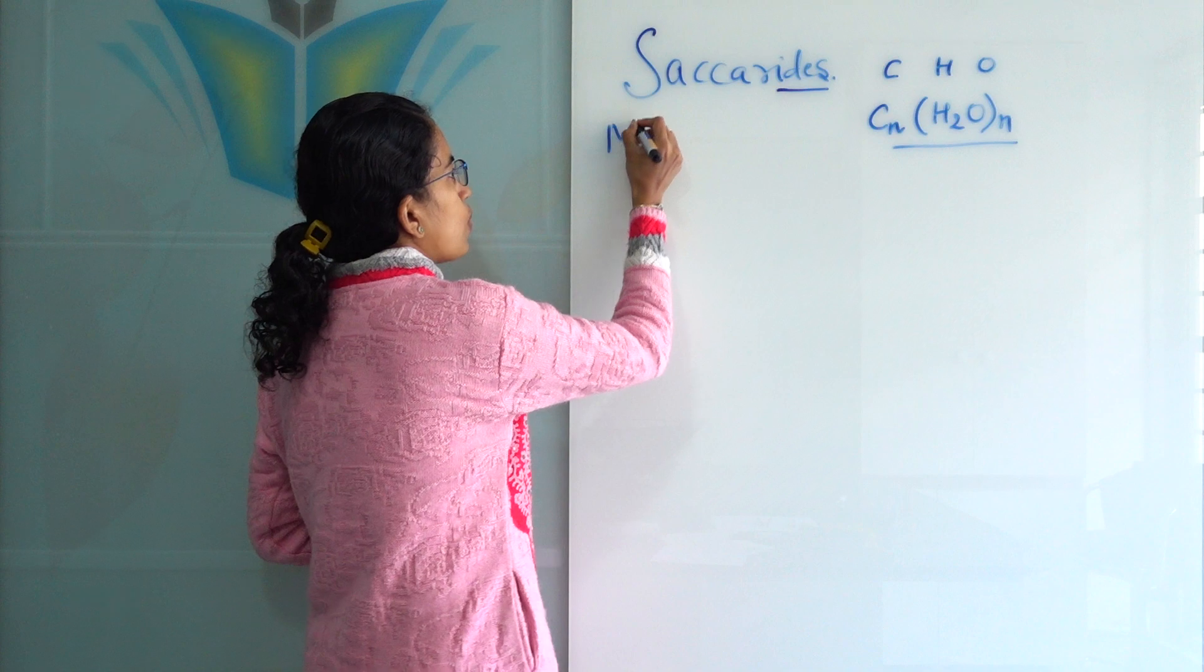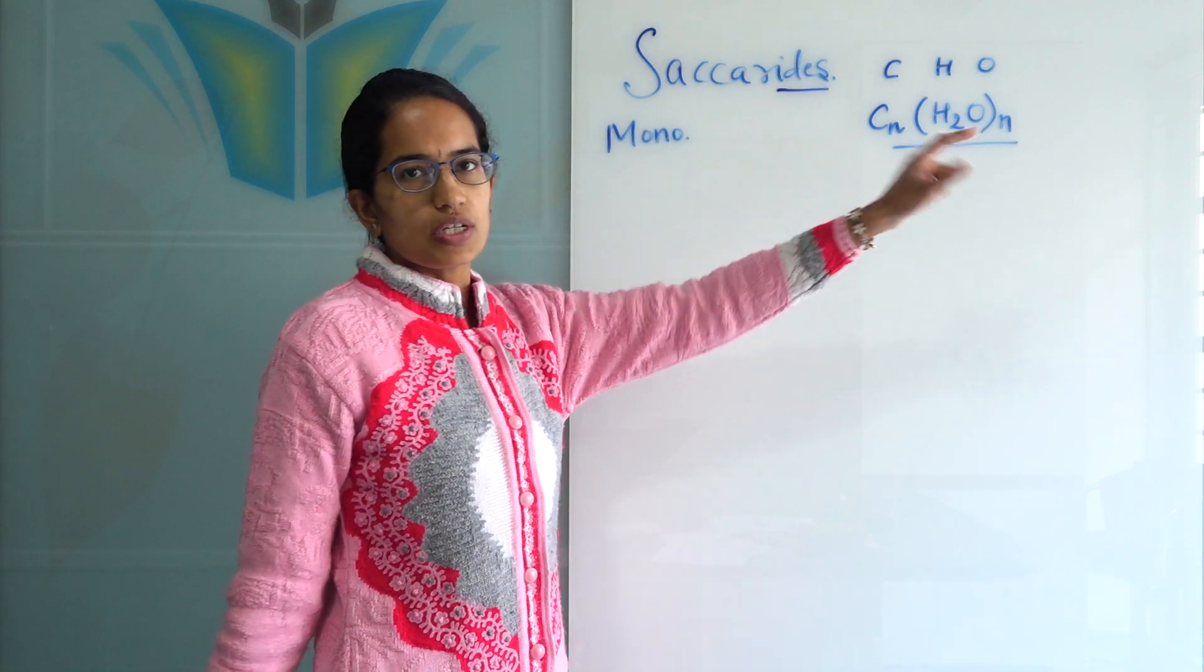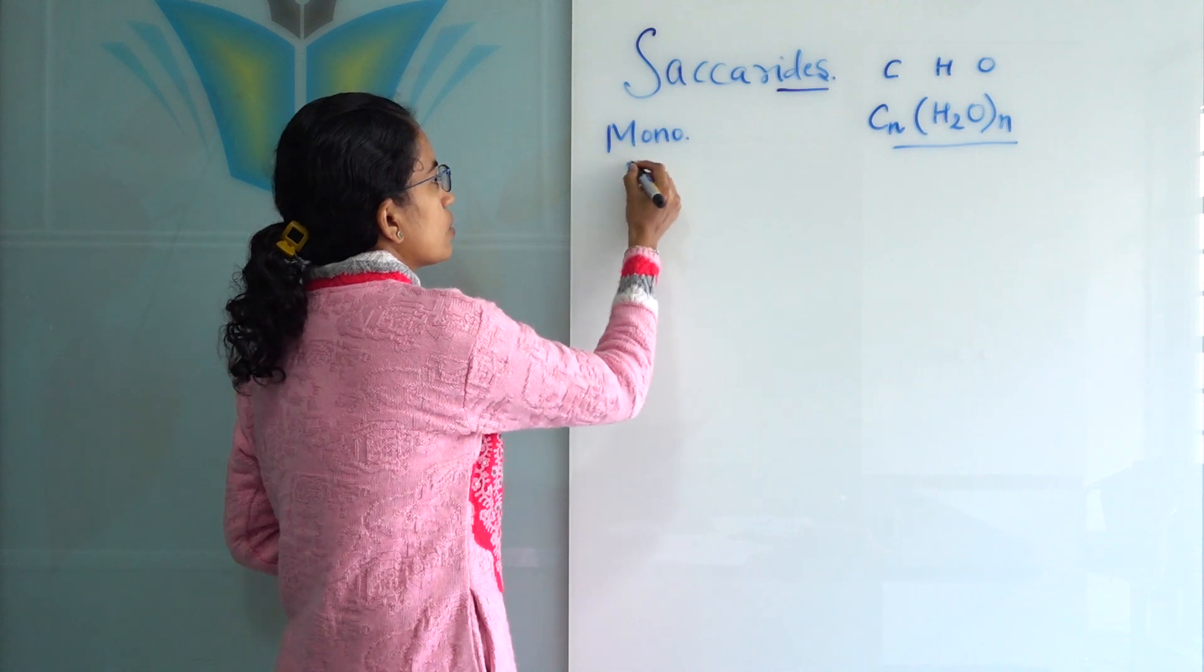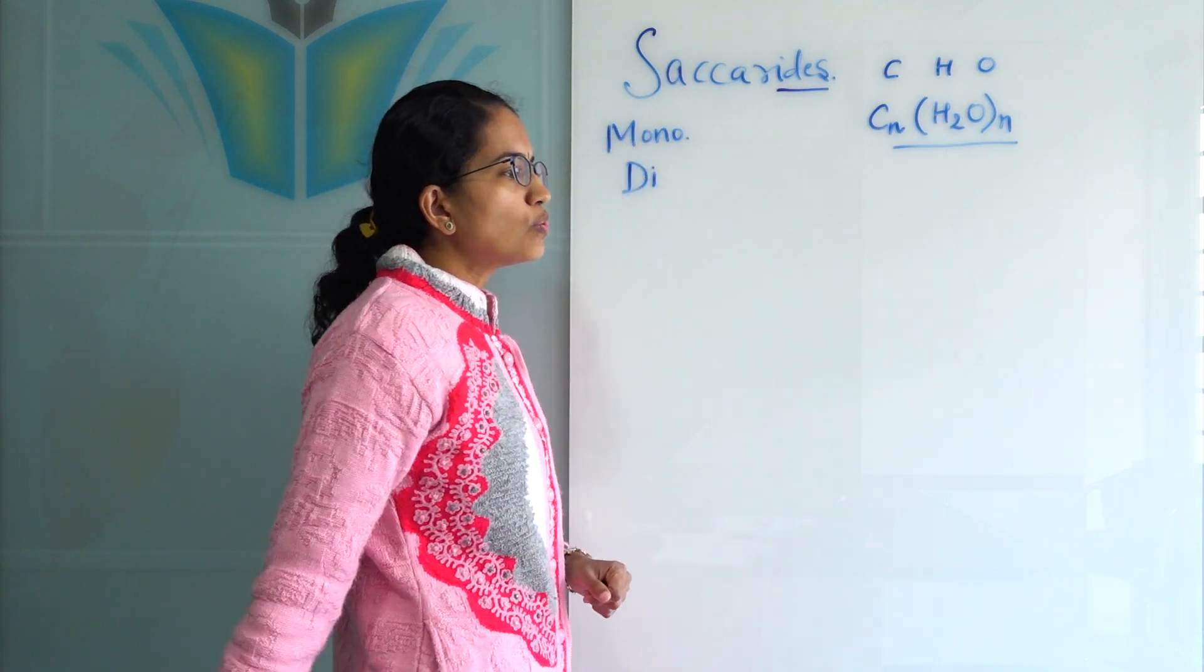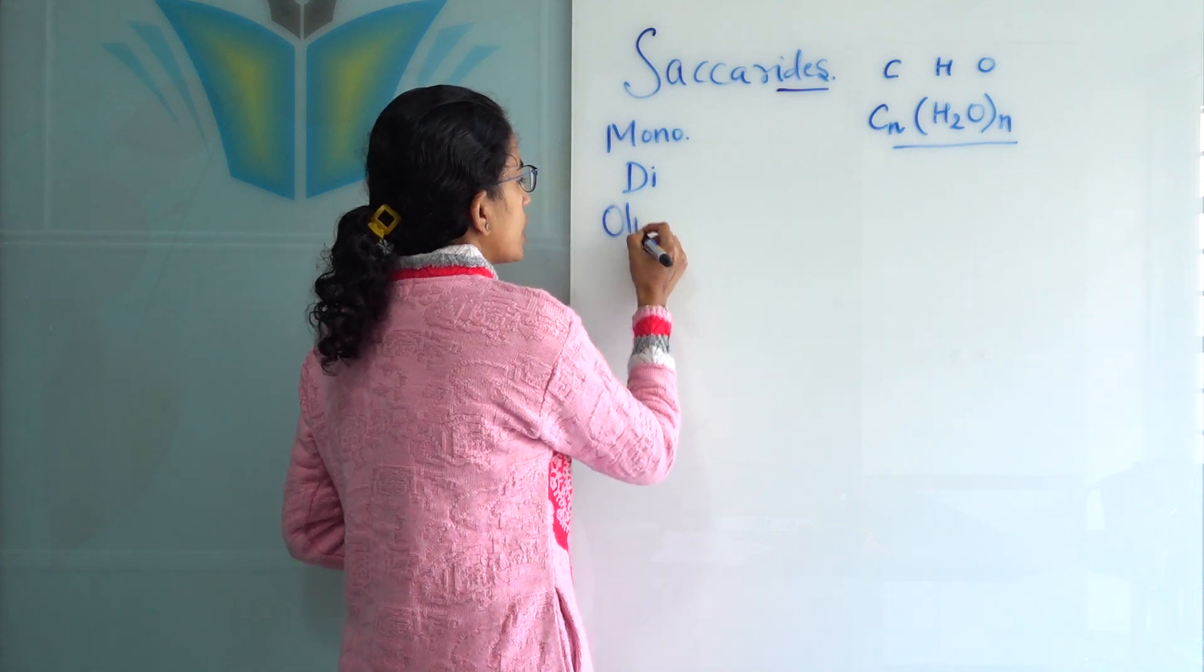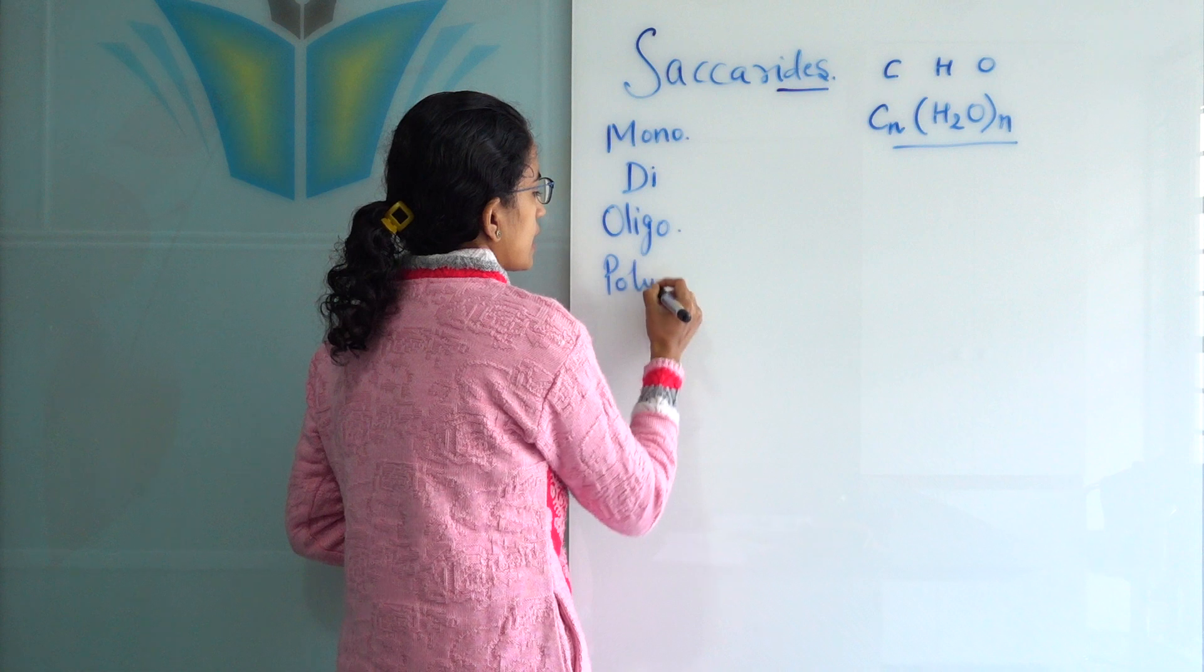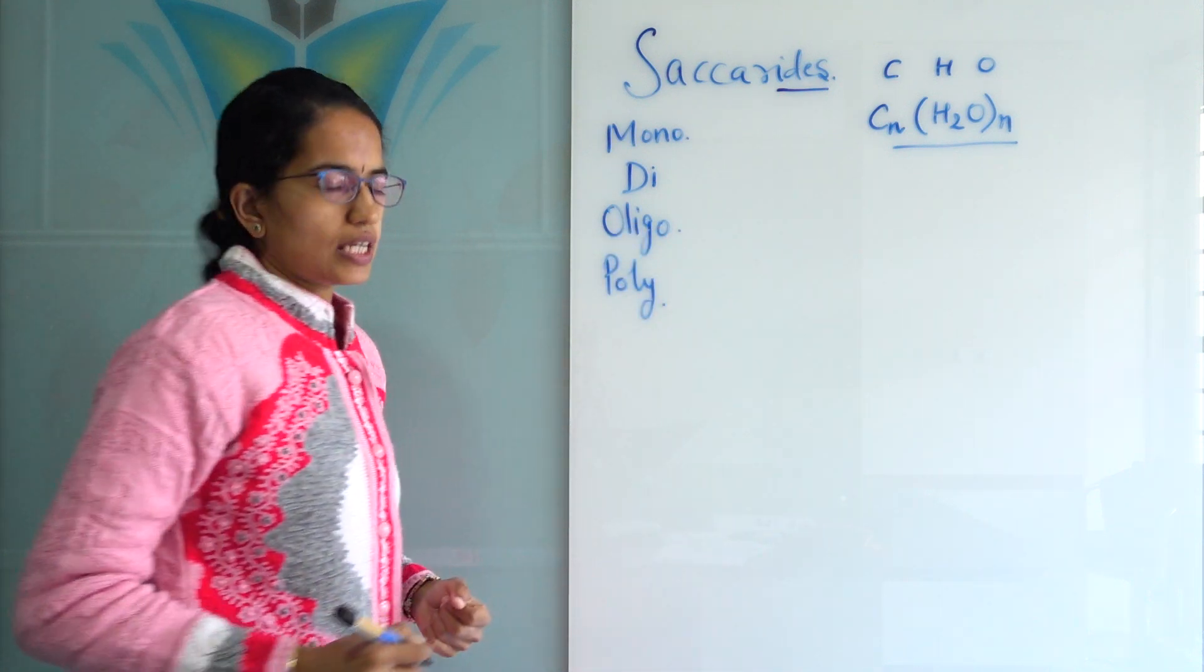Now, in case of just one unit, we call this as monosaccharide. So, everything here would turn out to be one. In case of disaccharides, there are two single units of saccharides which are there. Then, we have oligosaccharides where few units are there and polysaccharides where multiple units are there.